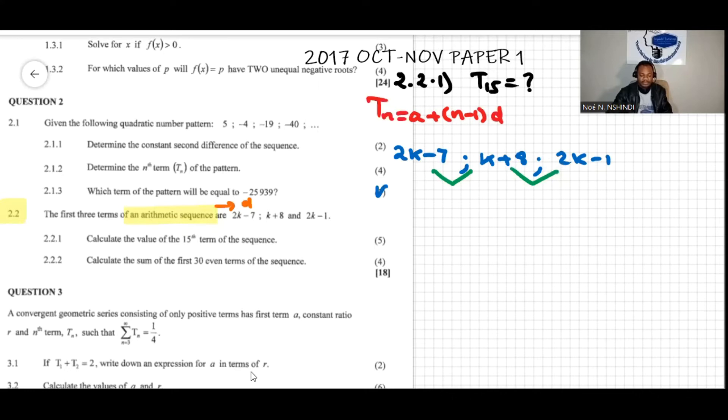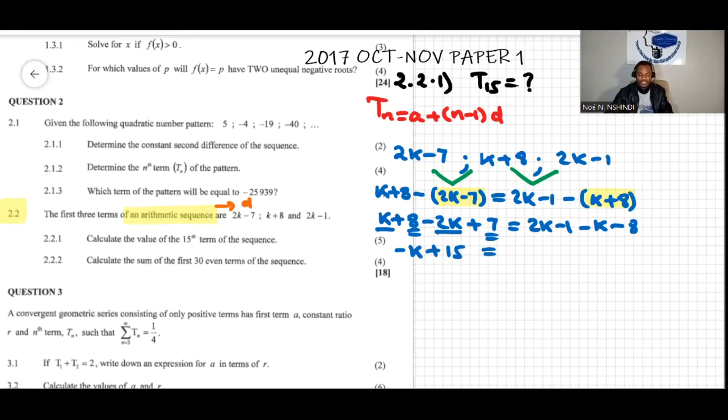I'm gonna do (k plus 8) minus (2k minus 7) and this must be equal to (2k minus 1) minus (k plus 8). I would like to emphasize that it is important to use brackets here when we have multiple terms, it helps avoid unnecessary mistakes. So we can write k plus 8 minus 2k plus 7, this must be equal to 2k minus 1 minus k minus 8. When the minus sign is outside the brackets it changes the sense of everything within the brackets.